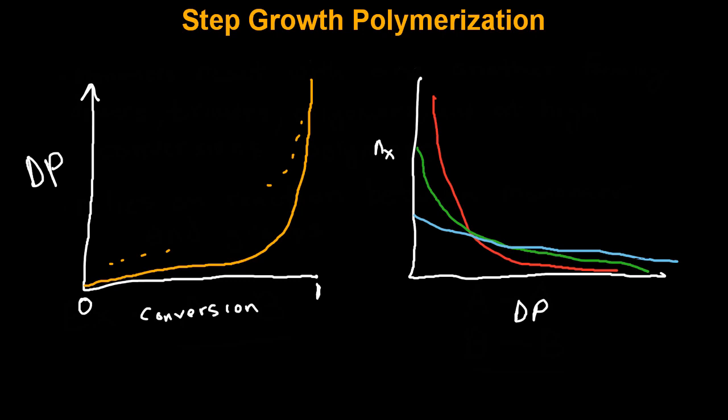This next graph depicts the size distribution within a step growth polymerization, in which the red line depicts a lower conversion, green is a higher conversion, and then blue is even higher. At lower conversions by that red line, you have a larger number of smaller size chains. But as the conversion gets higher, when going from red to green and then green to blue, the number of larger molecular weight species increases significantly, while the number of smaller oligomers decreases. However, at those higher conversions, the overall size distribution is fairly broad.